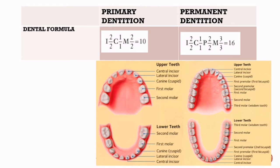Now let's have a look at the dental formula. The number of teeth of each type is written as a dental formula for one side of the mouth or quadrant, with the upper and lower teeth shown on separate rows. The number of teeth in a mouth is twice that listed as there are 2 sides. In each set, incisors are indicated first, canines second, premolars third, and finally molars.